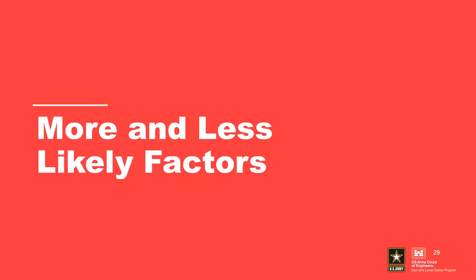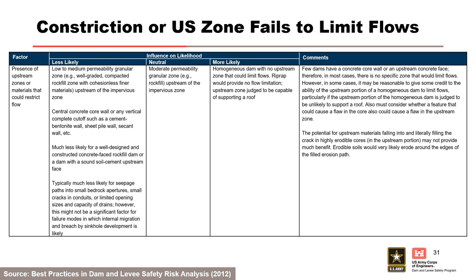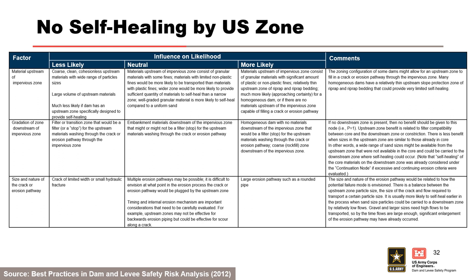The following table from the best practices manual can be used to help assess the likelihood of progression of internal erosion. It can be used as a starting point, but the risk team must develop project-specific more likely and less likely factors to guide subjective probability estimation. The factors in this portion of the table address a continuous stable roof and sidewalls, upstream flow limitation, and self-healing by an upstream zone.